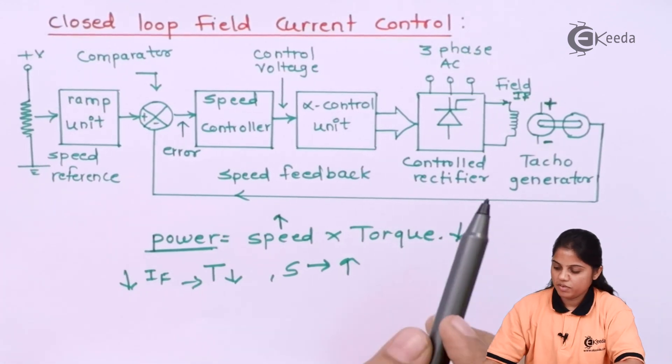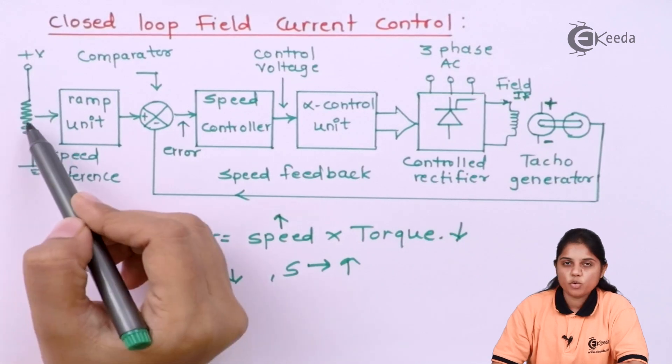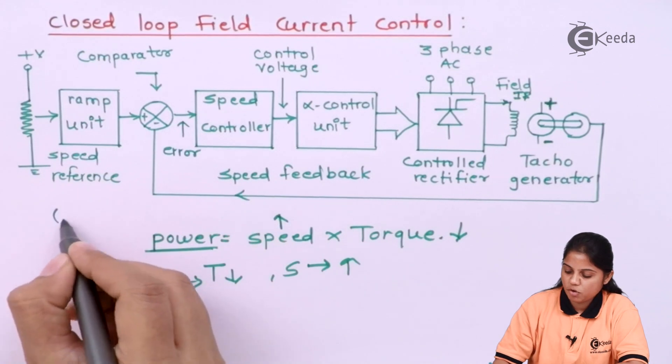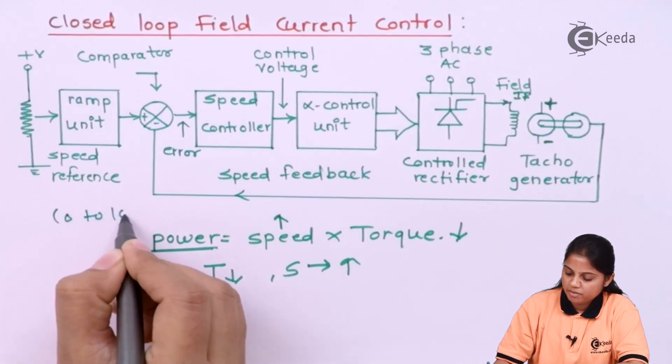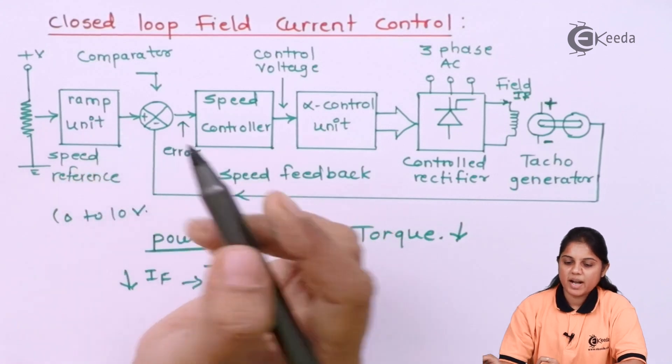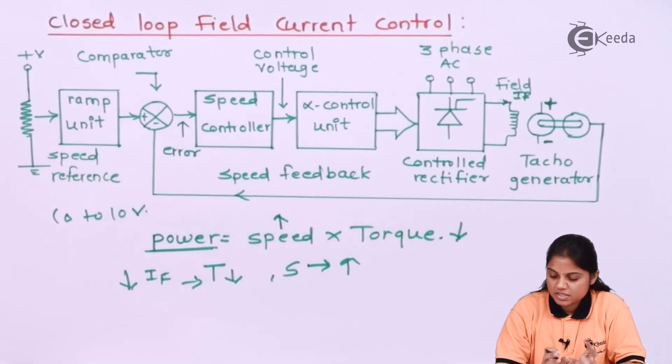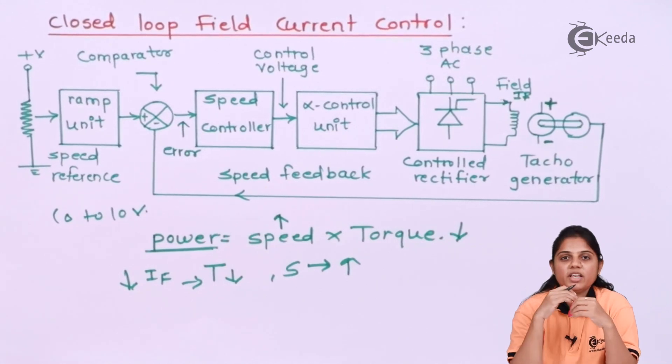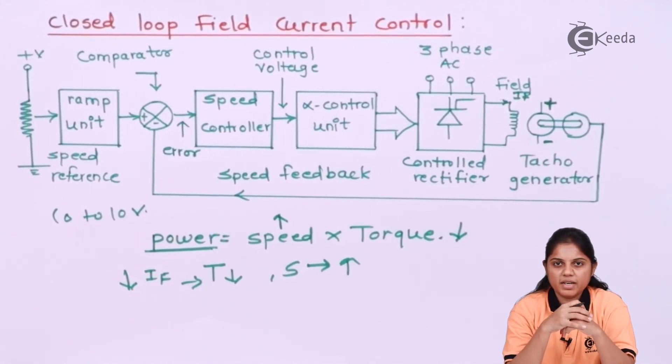Now let us see here what will happen. Again, you have a potentiometer where you have given a plus voltage and this voltage will be from 0 to 10 volts. This will be given to the ramp unit. So the ramp unit will give you soft start, and soft start is nothing but gradual acceleration of the motor.